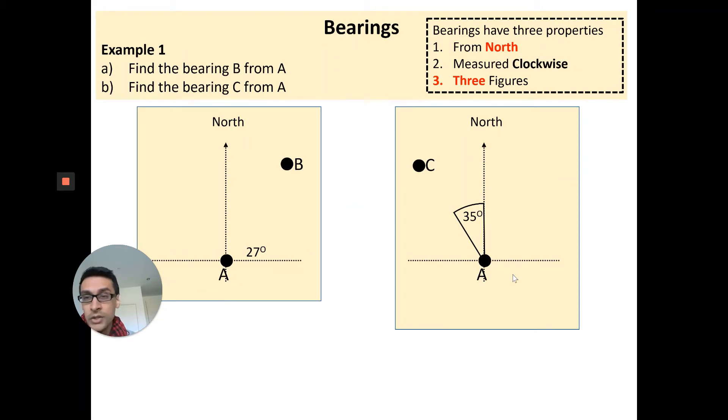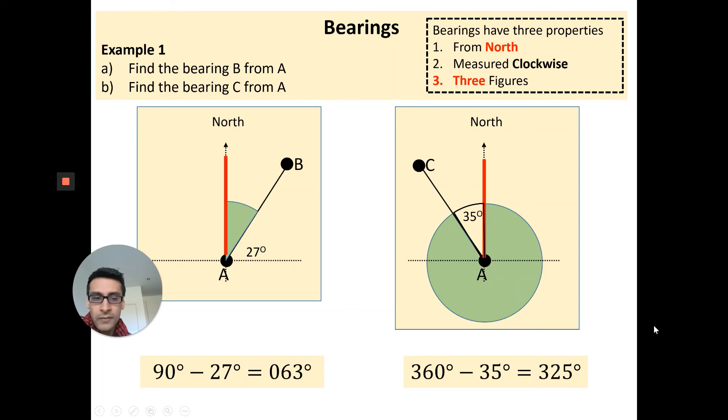So looking at actually applying it to a question, example one here. We're on a bearing B from A, so we're traveling from A. The first thing you do is point out the north line, draw a line from A to B. Now you've been told that this angle is 27 degrees, but we want to start from north and go clockwise. So that's the angle we want. You can see because that's a 90 degree angle given, you do 90 minus 27, you get 063 degrees. Second example here, I want to go on a bearing C from A. So I draw my north line, I draw my line from A to C, and then I go clockwise, so it has to be 360 take away 35, which is 325 degrees.